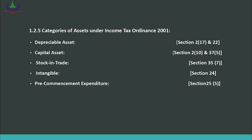Now we discuss the various categories of assets. Different assets are described under different names. The first is depreciable asset, mentioned in Section 2(17) and Section 22. Then there are capital assets, described in Section 2(10) and Section 37(5). Capital asset refers to an asset not held for production purposes; the objective is to buy it and then sell it at a profit, on which you must pay tax. For example, a plot of land bought for 20 lakh and sold for 30 lakh gives a gain of 10 lakh.